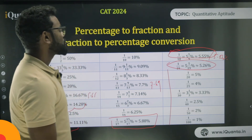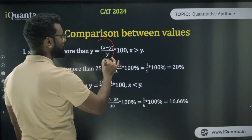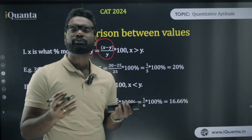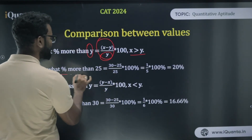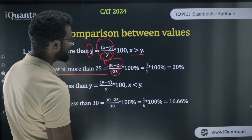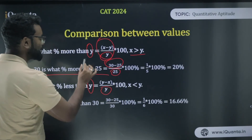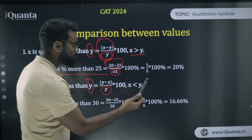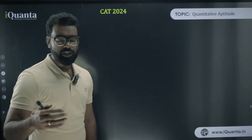Now let's look at comparison formulas. 'X is what percent more than Y' = [(X − Y) / Y] × 100 — Y is your base. Example: 30 is what percent more than 25? = (5/25) × 100 = 20 percent. 'X is what percent less than Y' = [(Y − X) / Y] × 100. Example: 25 is what percent less than 30? = (5/30) × 100 = 16.67 percent. Whatever you're comparing against goes in the denominator.